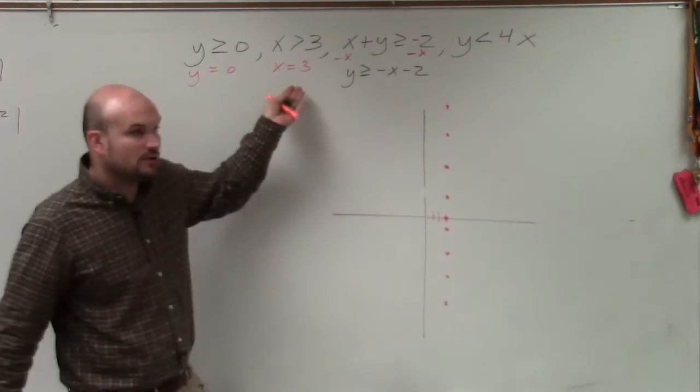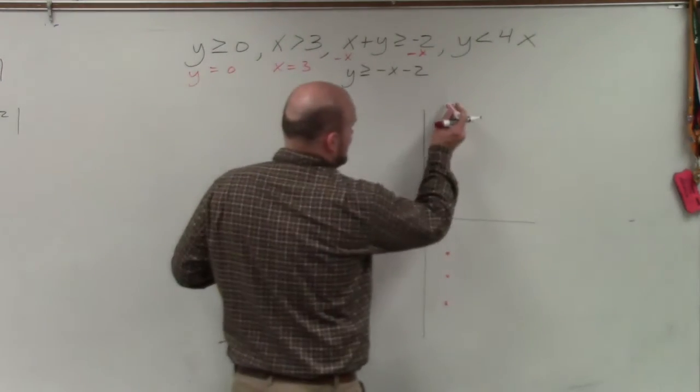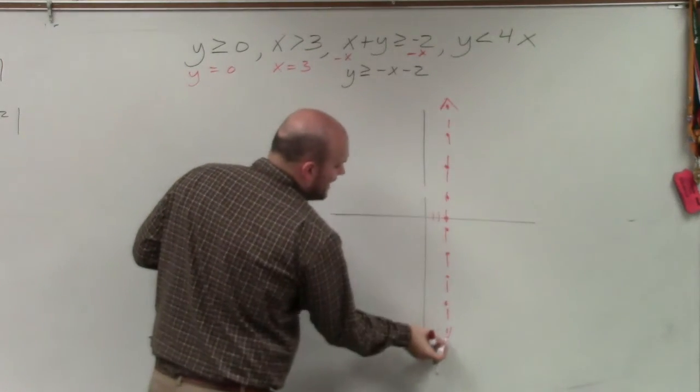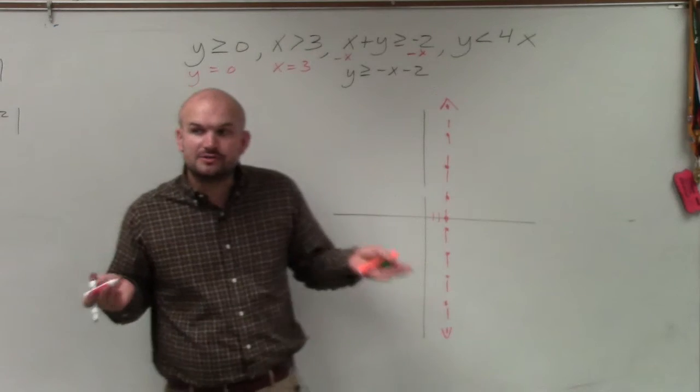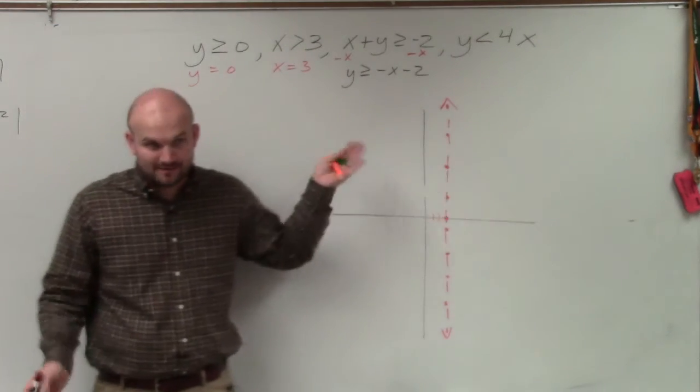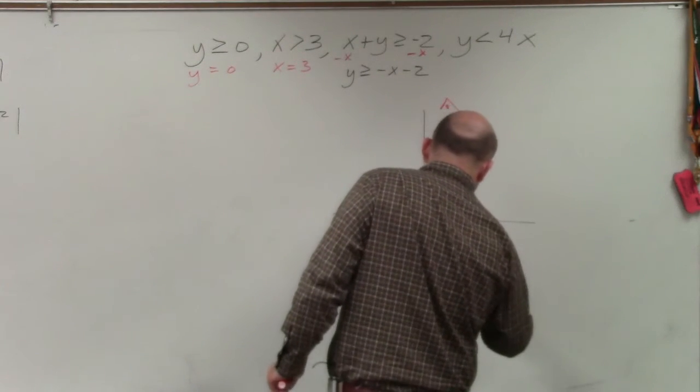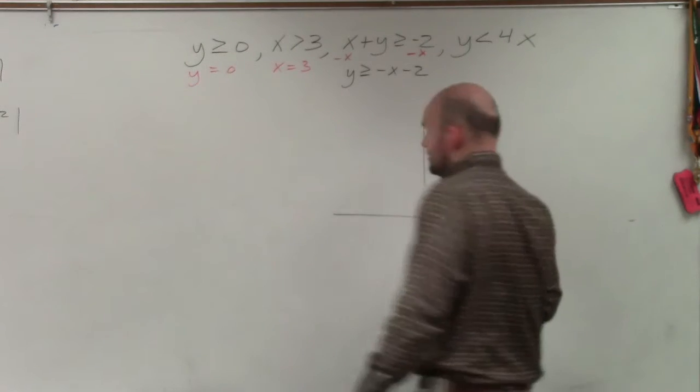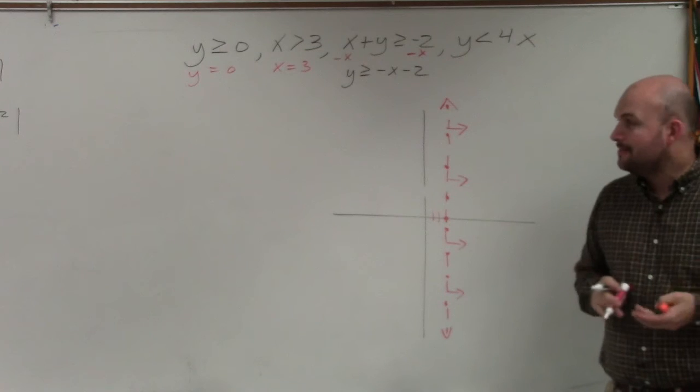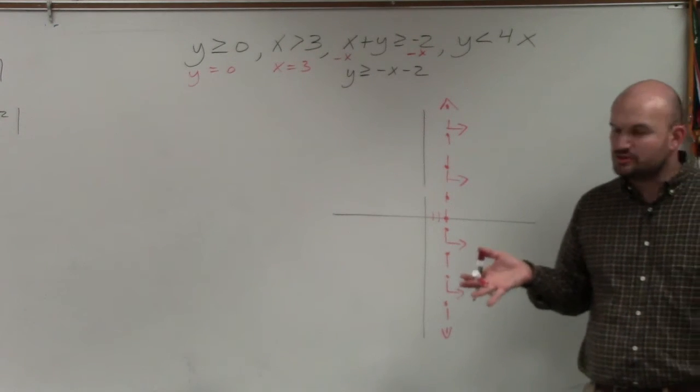But now we're talking about inequalities. If x is greater than, it's still going to be a line, but now it's going to be a dashed line. And then x is greater than 3—all we want to do is determine where the x values are greater than 3. To the right or to the left? To the right. Now, my recommendation is when you guys are graphing a whole bunch of lines, I recommend just doing some arrows. You guys can shade all of it, but it can get pretty confusing when you're doing more than two equations.